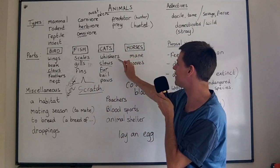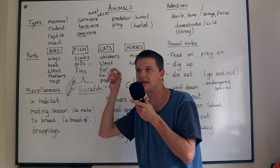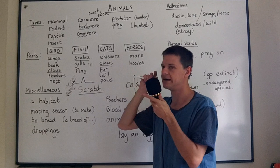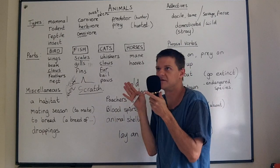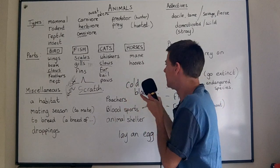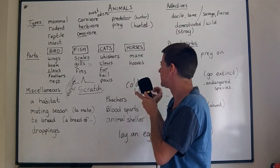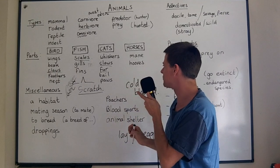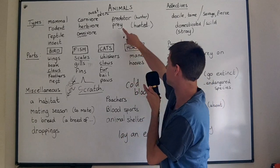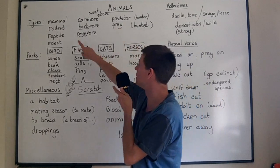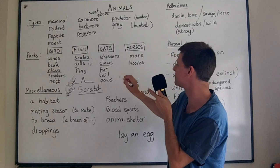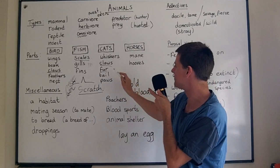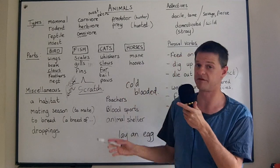On to cats. They have whiskers — I think they help the cat sense whether it can get through small spaces; it's something to do with their movement. They have claws for scratching, and if they've caught a rodent like a mouse, they'll use the claws to kill it. They're covered in fur, and they also have a tail for balance.